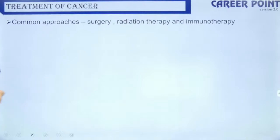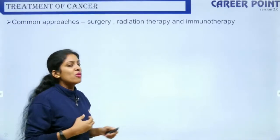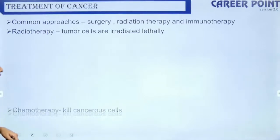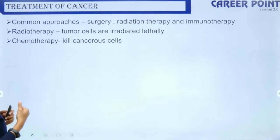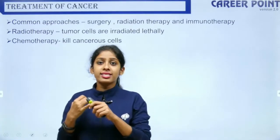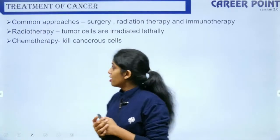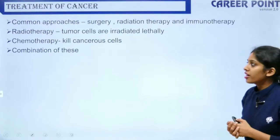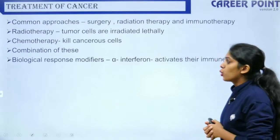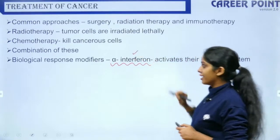Cancer treatment includes surgery to remove the tumor, radiation therapy using high ionizing radiation to kill cancer cells, immunotherapy to boost the immune system, and chemotherapy using high-dose chemicals. Chemotherapy kills all actively dividing cells, including hair and nail cells, which is why patients undergoing chemotherapy lose their hair. Often radiotherapy and chemotherapy are combined. Biological response modifiers like alpha-interferon (a cytokine) can also boost the immune system.